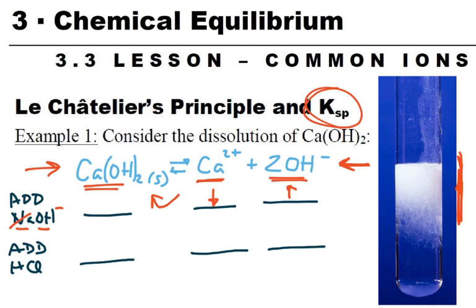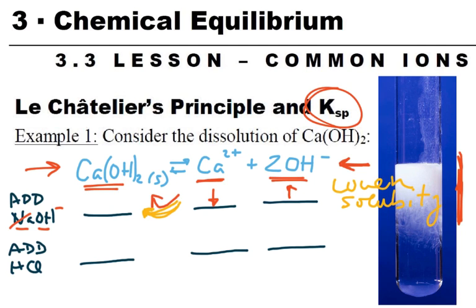The hydroxide ion concentration will go up because we're adding it. The calcium hydroxide — we're going to make more of it, but does its concentration change? No, because you can't change the concentration of a solid. What we care about is what's going to happen to its solubility. If we're saying the reaction is going this way, that means there are fewer ions in solution — we're making more solid. So we're going to lower the solubility.